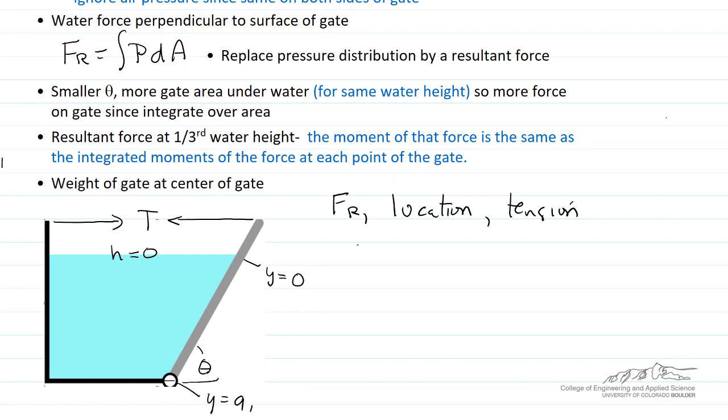The pressure at any point under the water is ρgh. We're ignoring air pressure since it's on both sides of the gate. We can write this as ρgy sin(θ) from trigonometry, relating distance y, distance h, and angle theta.